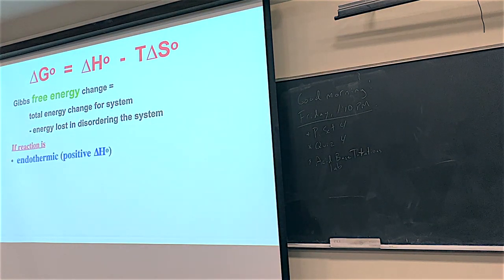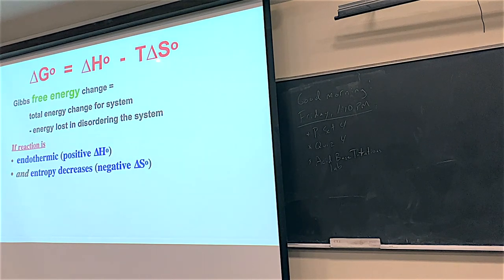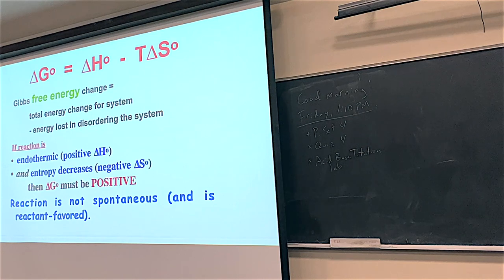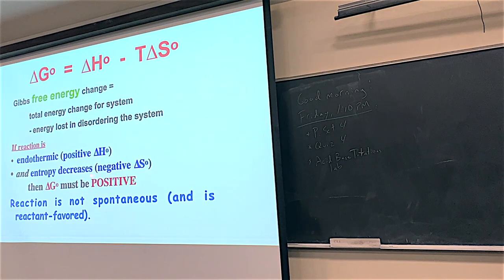Endothermic reactions with positive delta H's, combined with a decrease in entropy (negative delta S) — negative times negative makes that whole T delta S part positive. So if you have endothermic and a decrease in entropy, your delta G will always be positive. Positive delta G's are the reactions that won't go. Negative delta G's are the ones that are going to happen. If a reaction has endothermic and decreasing entropy, you're always going to get positive delta G's.